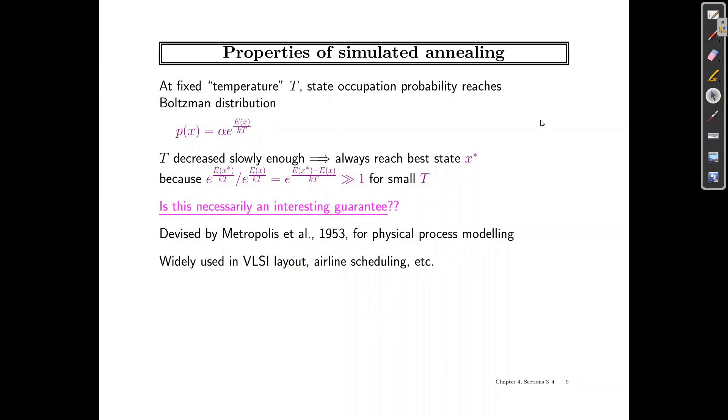So this is something similar to the real world nature of annealing. Next, we look at the properties of simulated annealing. Simulated annealing has been used in a number of cases. So we've got examples in the case of VLSI layout, airline scheduling problems, and initially it was proposed in 1953.